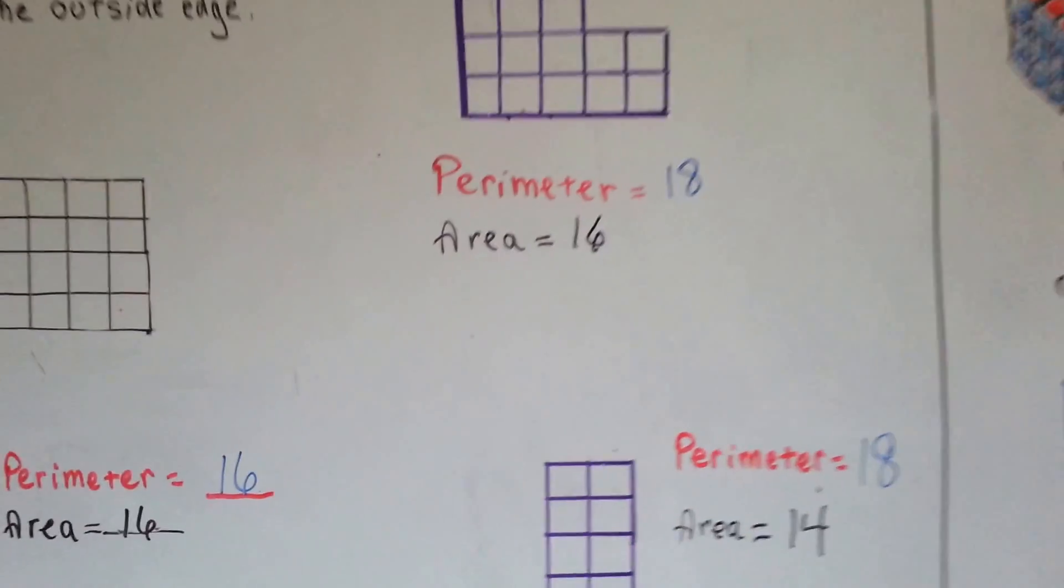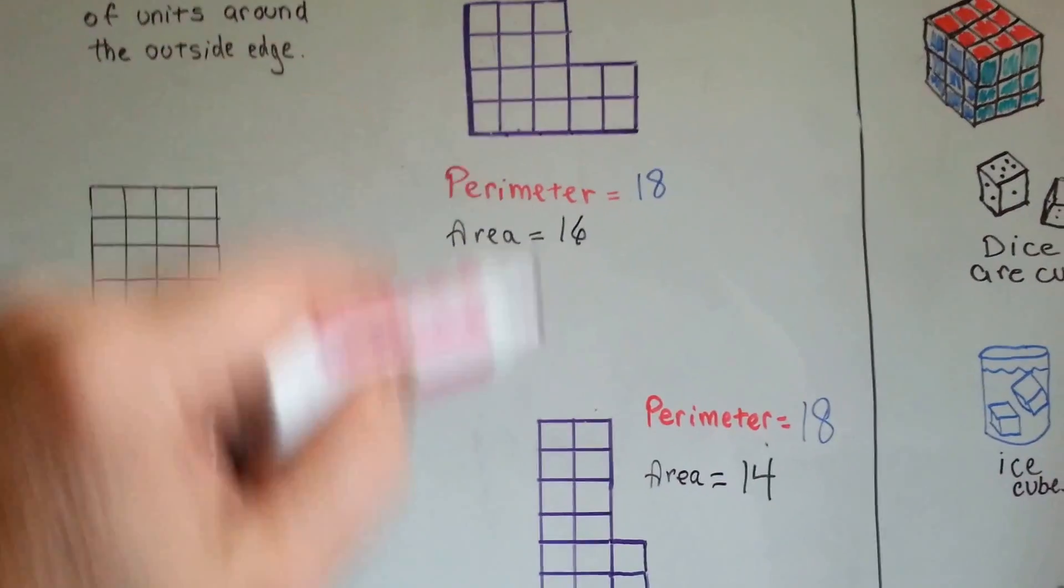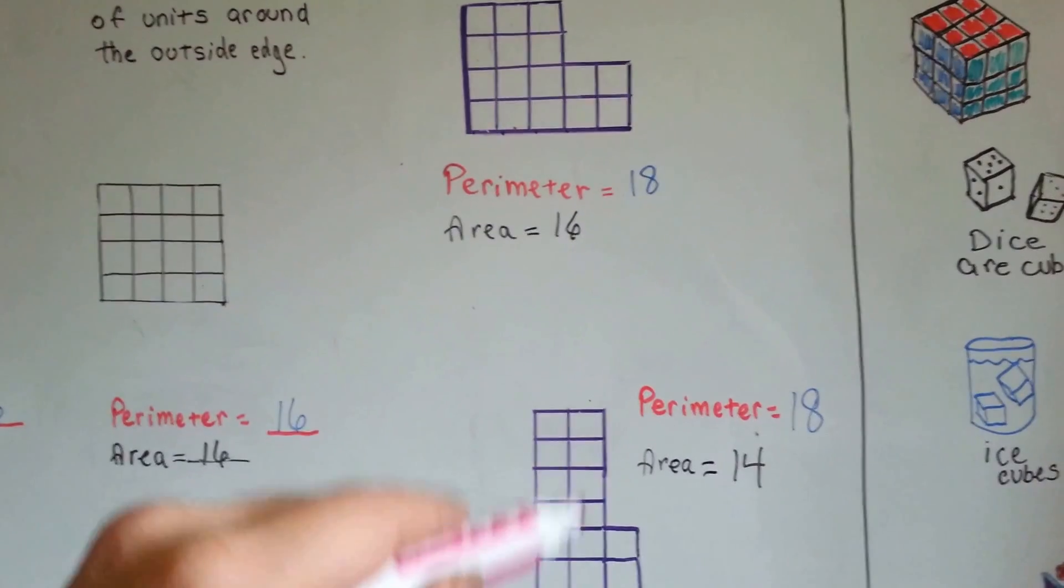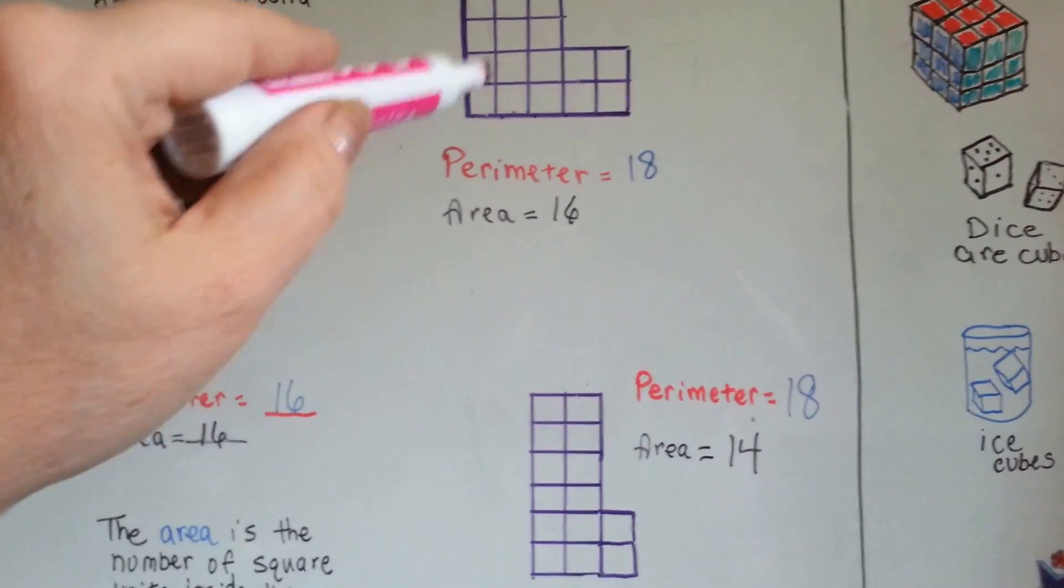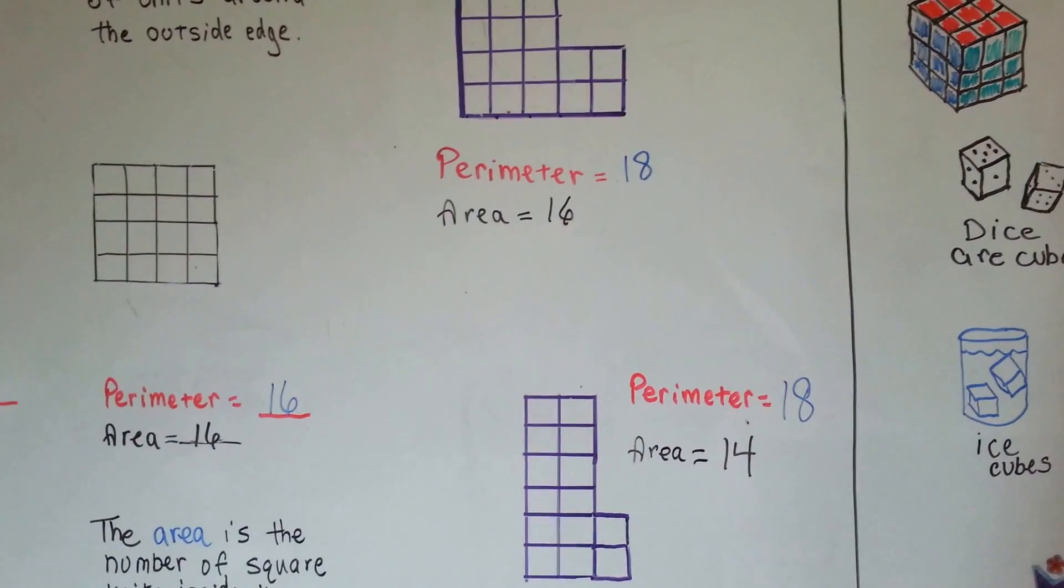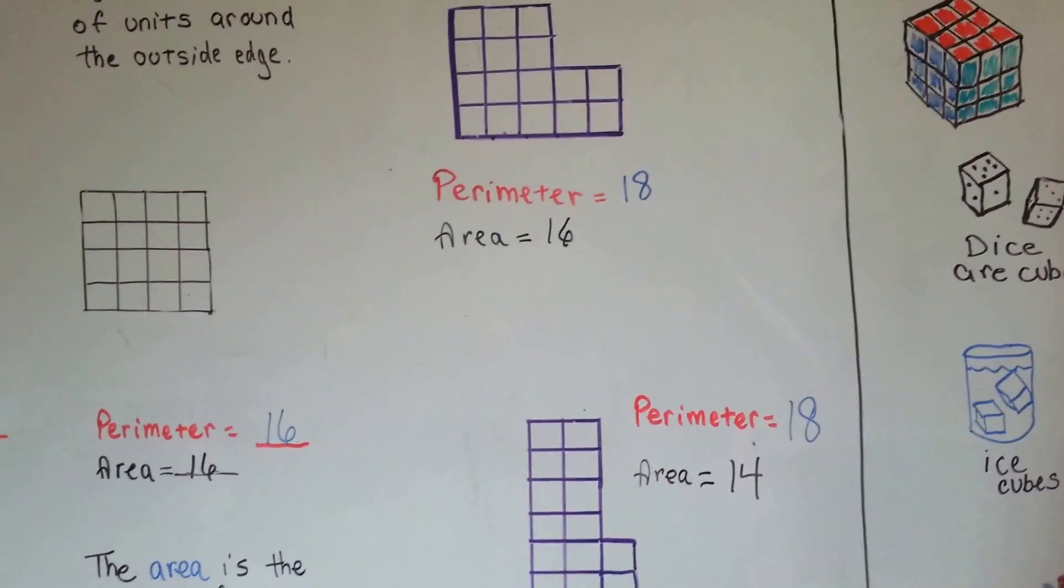Now let's look at these two. The perimeter on this one is 18, and so is this one. But these shapes are sort of the same because they look like they have a step, but they're completely different really, because this one's fatter, this one's taller and skinnier. This one has an area of 16, this one has an area of 14.